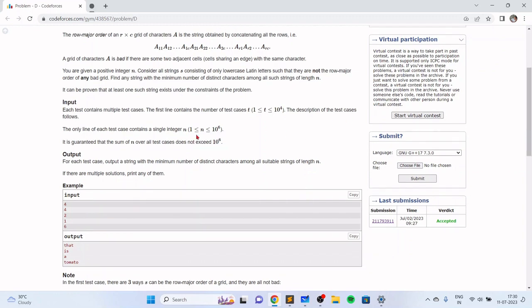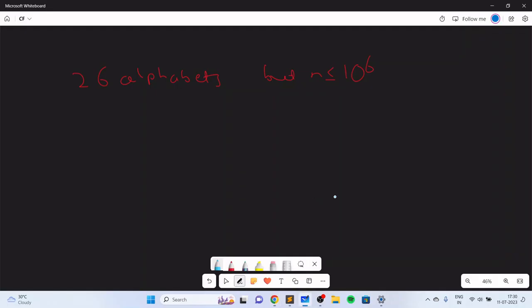Once you start thinking along those lines you'll reach the solution pretty quickly along with one other observation. The intuition behind this observation is that if you have an integer n, let's take an example which is 6, you can write 6 as 2 into 3, so the divisors of 6 are just 1, 2, 3, 6.